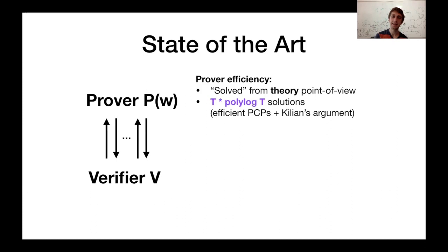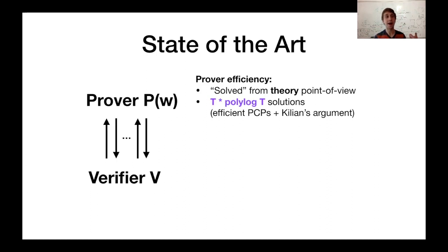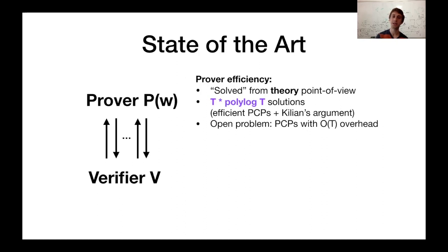The problem is that even though this is a really nice, beautiful line of work from the theory side of things, in practice this is not the most efficient. These polylog t factors may be a factor of a thousand or more in practice — so if you're taking an hour-long computation and it takes a thousand hours to prove it, maybe it's not worth it. And this approach seems inherently problematic because we've been studying these PCPs for over 30 years, and it would be a huge open problem to get PCPs with only linear overhead as opposed to this t times polylog t overhead.